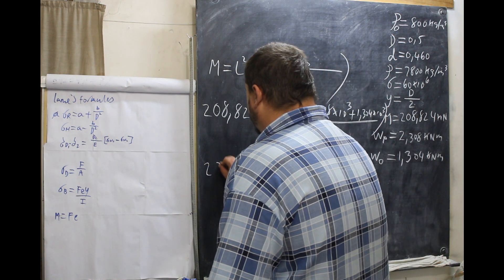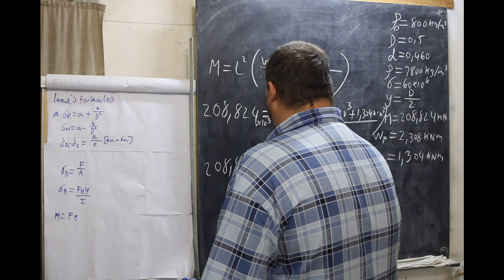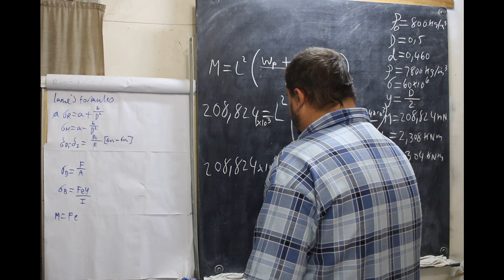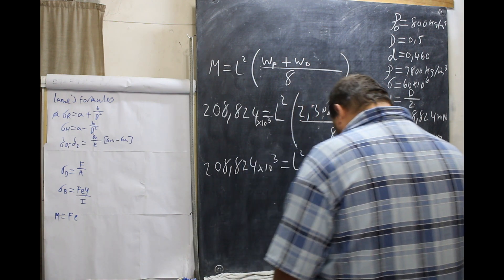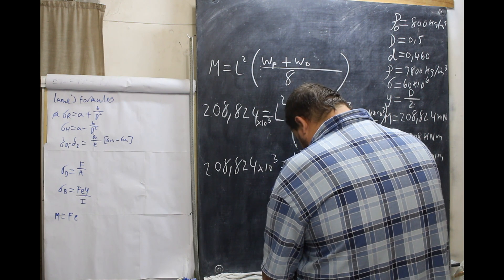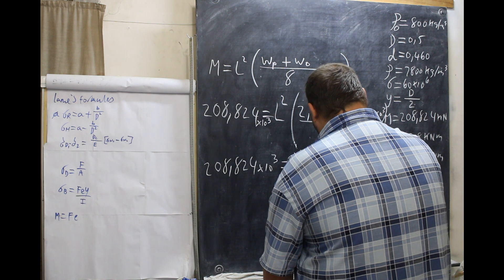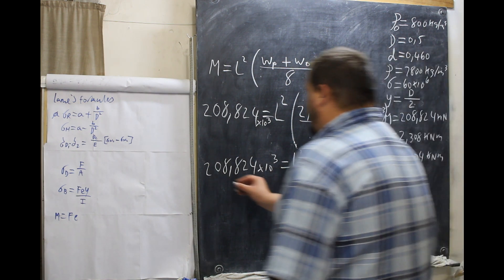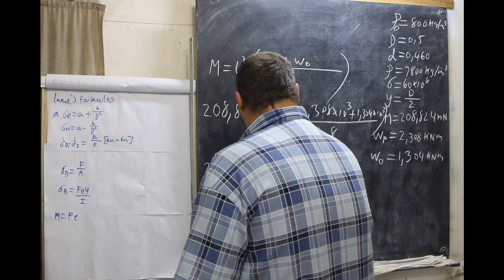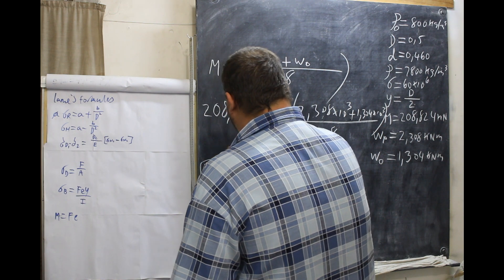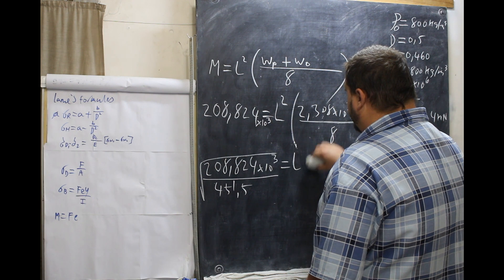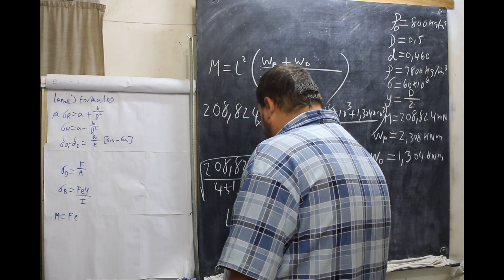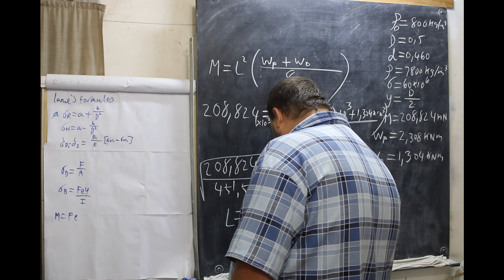Our number is 208,824 times 10 to the 3, equals L squared. And this is 451.5. So now we are going to divide by 451.5, take the root thereof, and we have L. So finally, L, the length between the supports, is 21.51 meters.